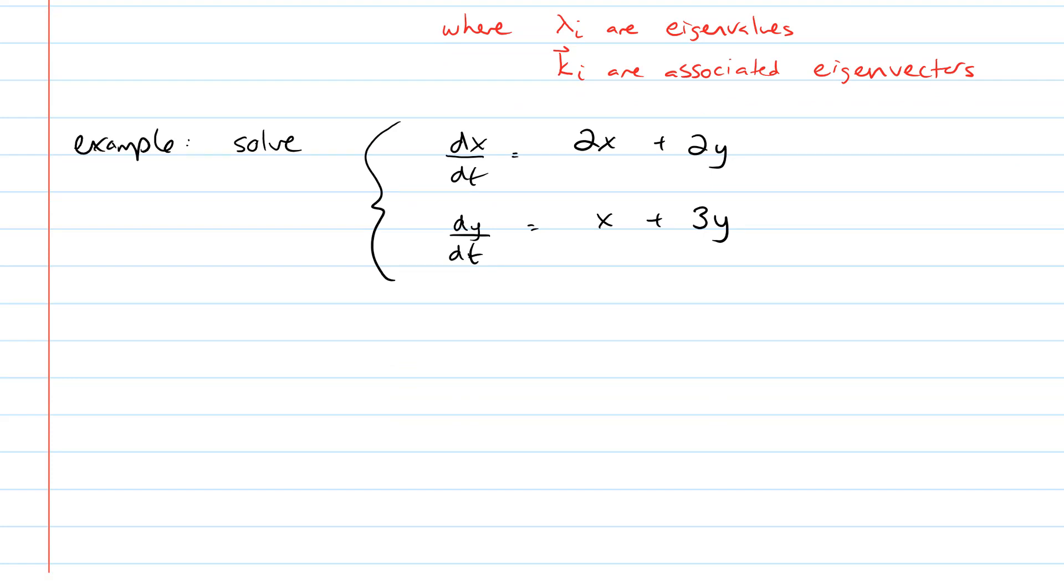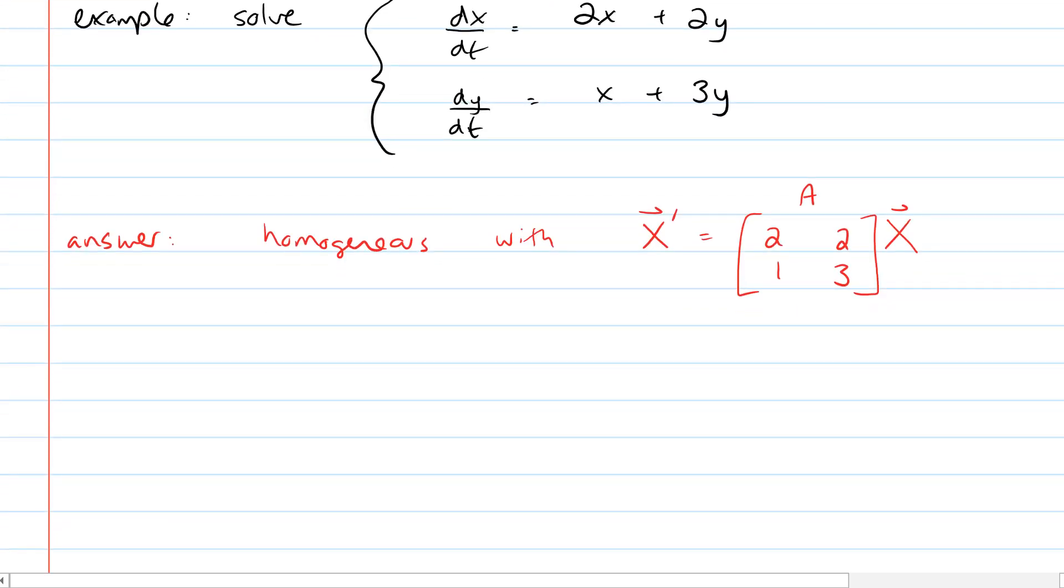So the first thing we're going to do, after writing that now we're working on the answer here, so this is homogeneous. I'm just going to write this in matrix form. In matrix form, it's capital X vector prime, so the derivative of it, is equal to some matrix times vector capital X. I'm trying to make my x's nice and distinct, nice capital letters as opposed to lowercase, and my matrix A here is made up of 2, 2, 1, and 3, all the coefficients that you can see in our system above.